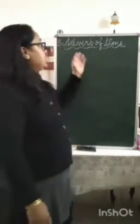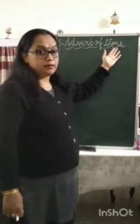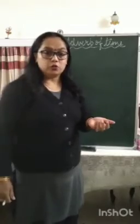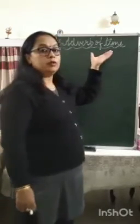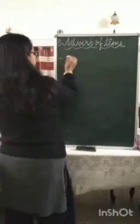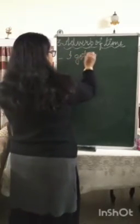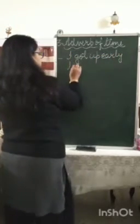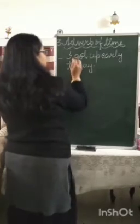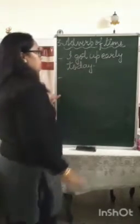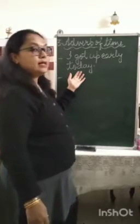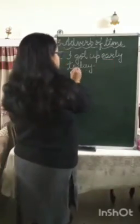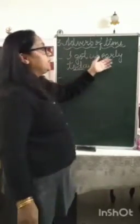The third kind of adverb is adverb of time. Words which tell you when, or at what time, an action took place come under adverb of time. For example: I got up early today. Here there are two adverbs of time — 'early' tells you when in the morning I got up, and 'today' tells you on which day.